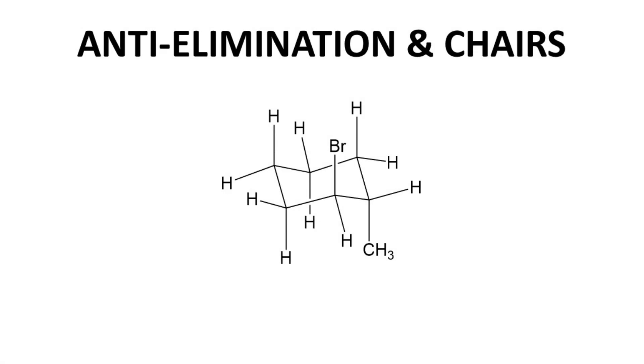In a different video we showed E2 eliminations on cyclohexane rings. Cyclohexanes are great for showing how E2 reactions are more favorable if the leaving group is anti relative to a beta hydrogen. The rings with their axial and equatorial orientations allow easier visual visualization of the anti orientation of adjacent groups.